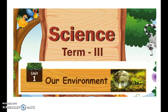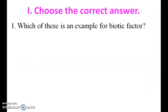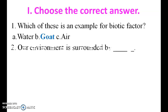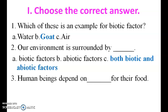Welcome friends. Today we are going to see Term 3 Science Unit 1: Our Environment - book exercises. Choose the correct answer. Which of these is an example for a biotic factor? The answer is goat. Our environment is surrounded by both biotic and abiotic factors. Human beings depend on plants for their food.